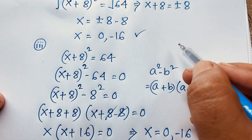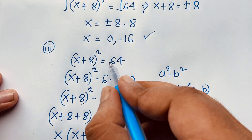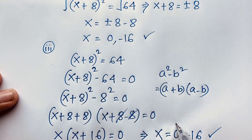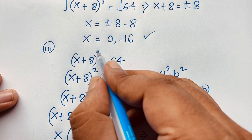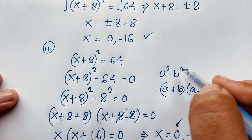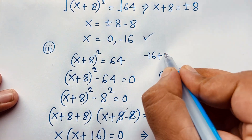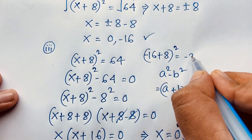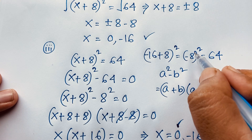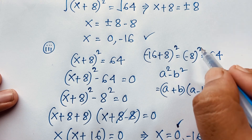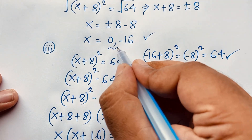Let's verify using our original equation (x + 8)² = 64. If x = 0: (0 + 8)² = 8² = 64 ✓ — left-hand side equals right-hand side. If x = −16: (−16 + 8)² = (−8)² = 64 ✓ — since the power is an even number, the negative becomes positive. Our final solution is x = 0 and x = −16.